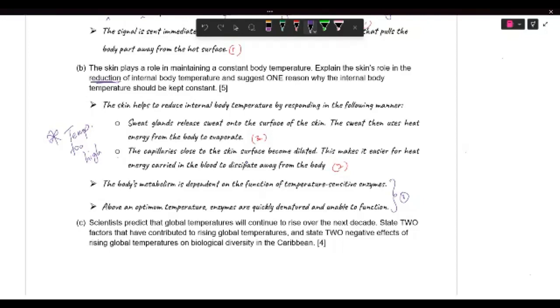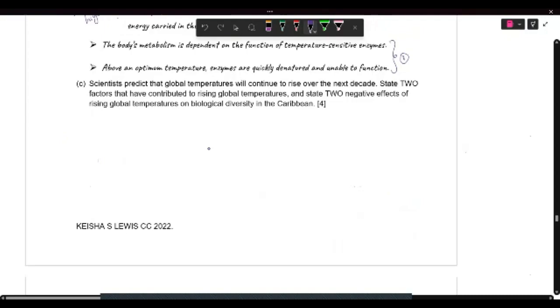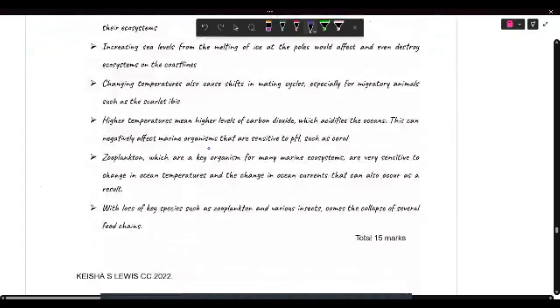And then we have part C. So scientists are predicting global temperatures will continue to rise over the next decade. And we are asked to state two factors that have contributed to rising global temperatures and negative effects of rising global temperatures. So there's a lot to talk about here.